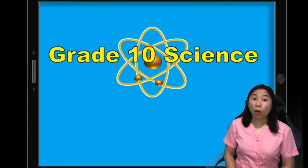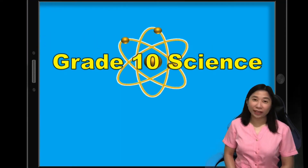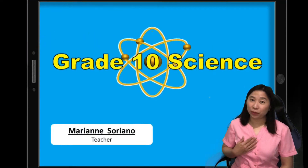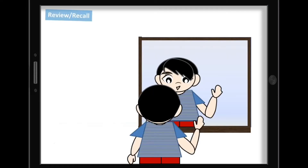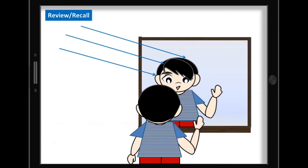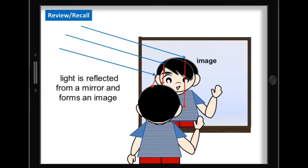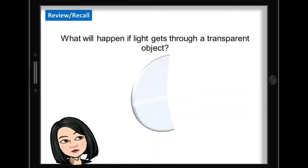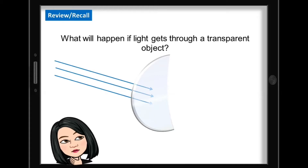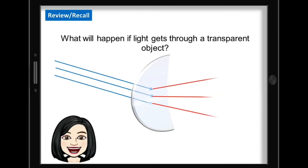Hello students! Welcome to Grade 10 Science Lesson, and I'm your teacher, Mom Marian Suriano. You have learned from our previous lesson that when light strikes a mirror, it will be reflected to form an image. But what will happen if light gets through a transparent object? Let's find out in today's lesson.